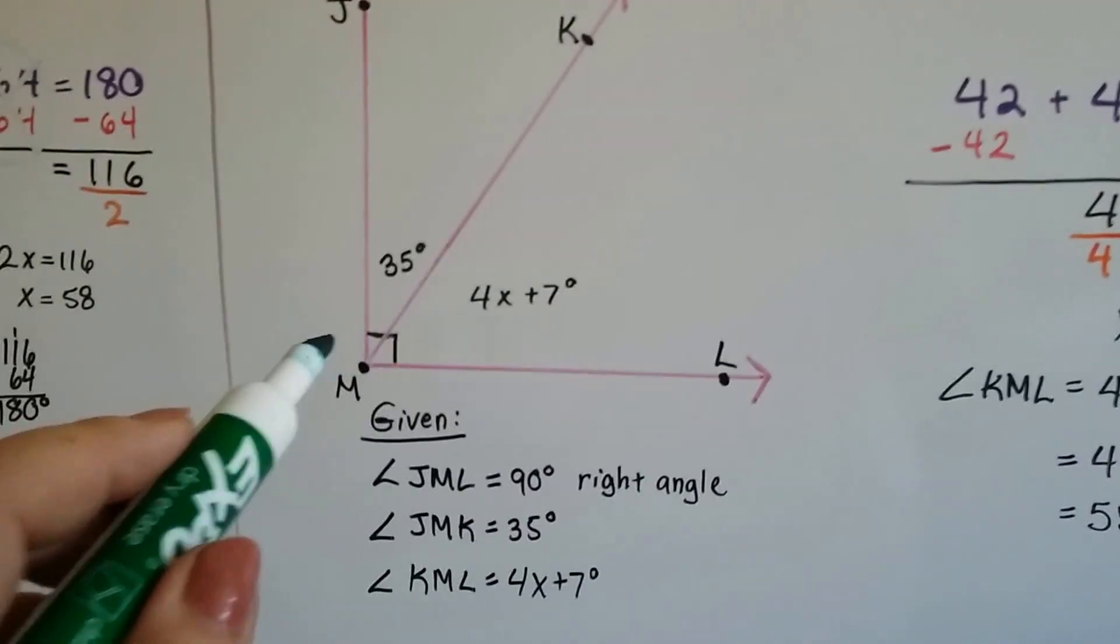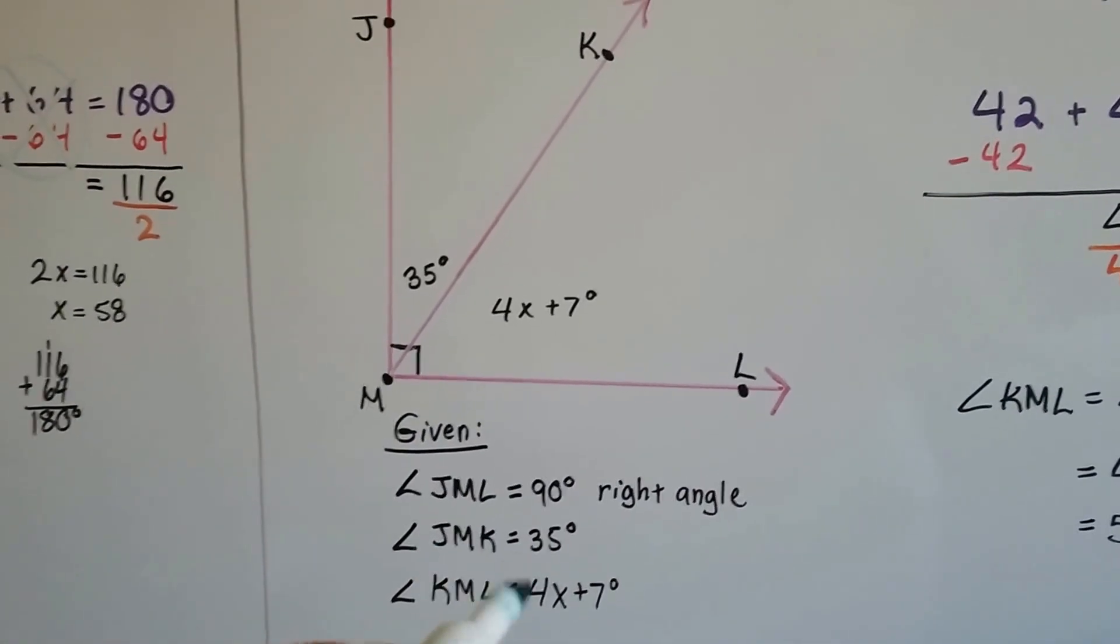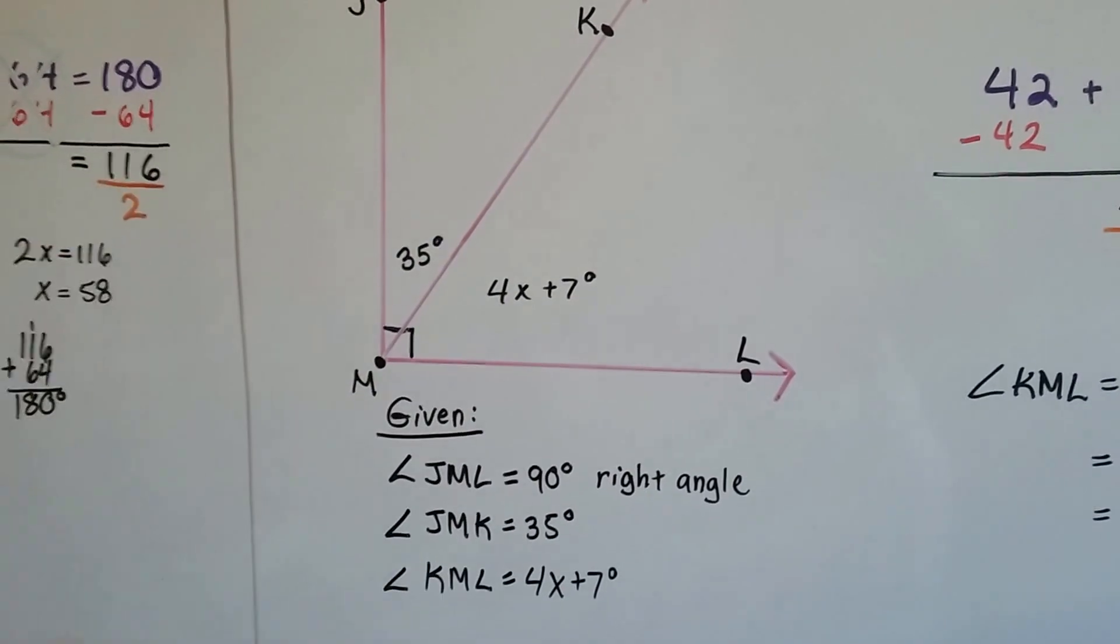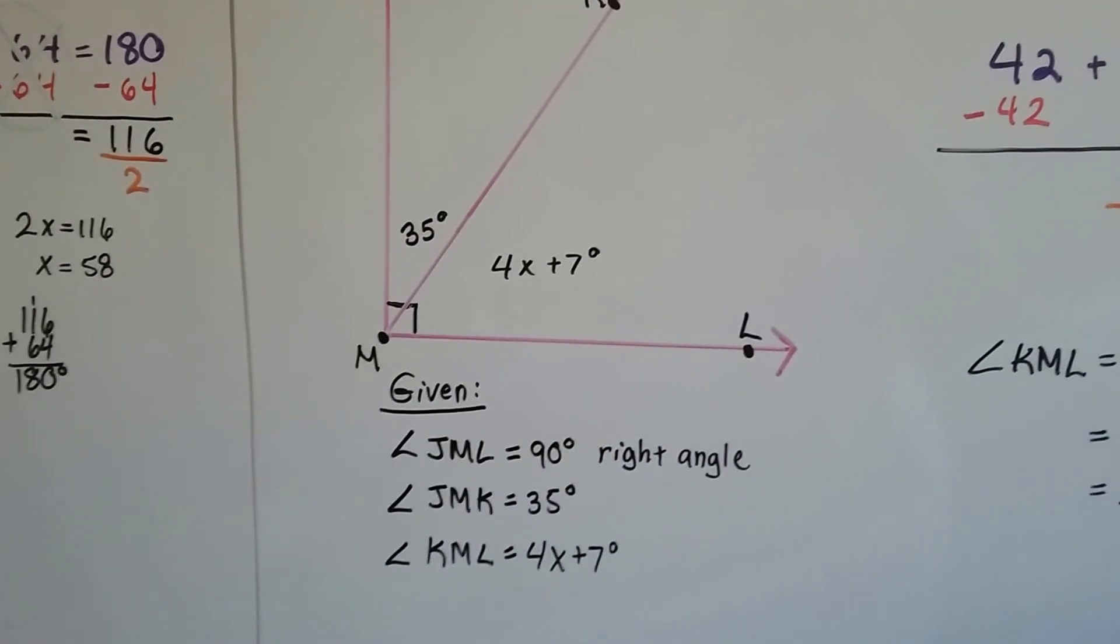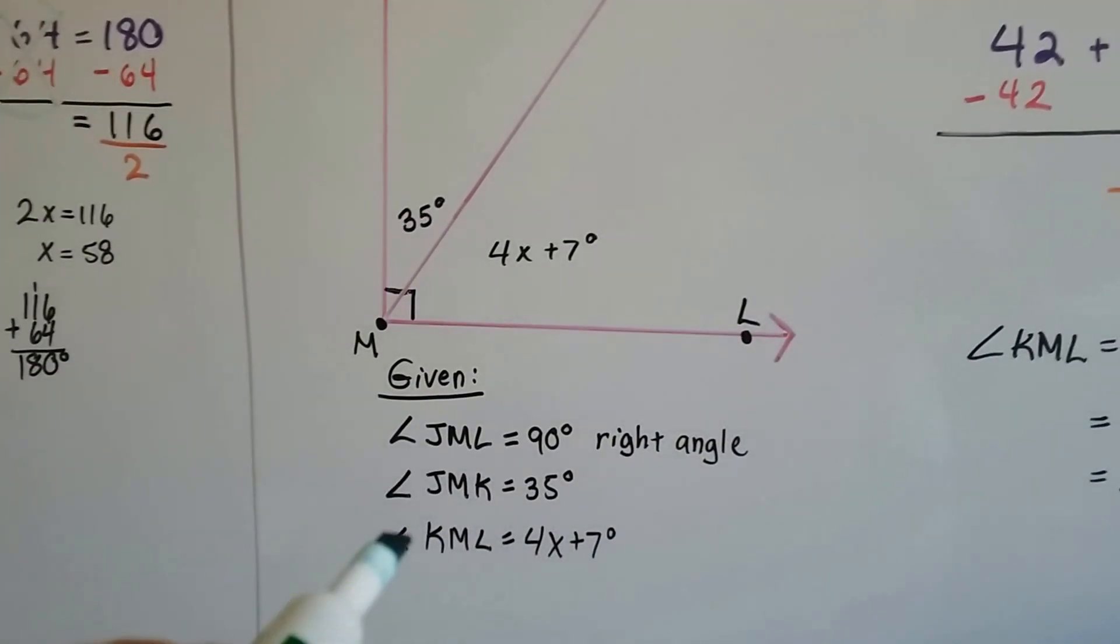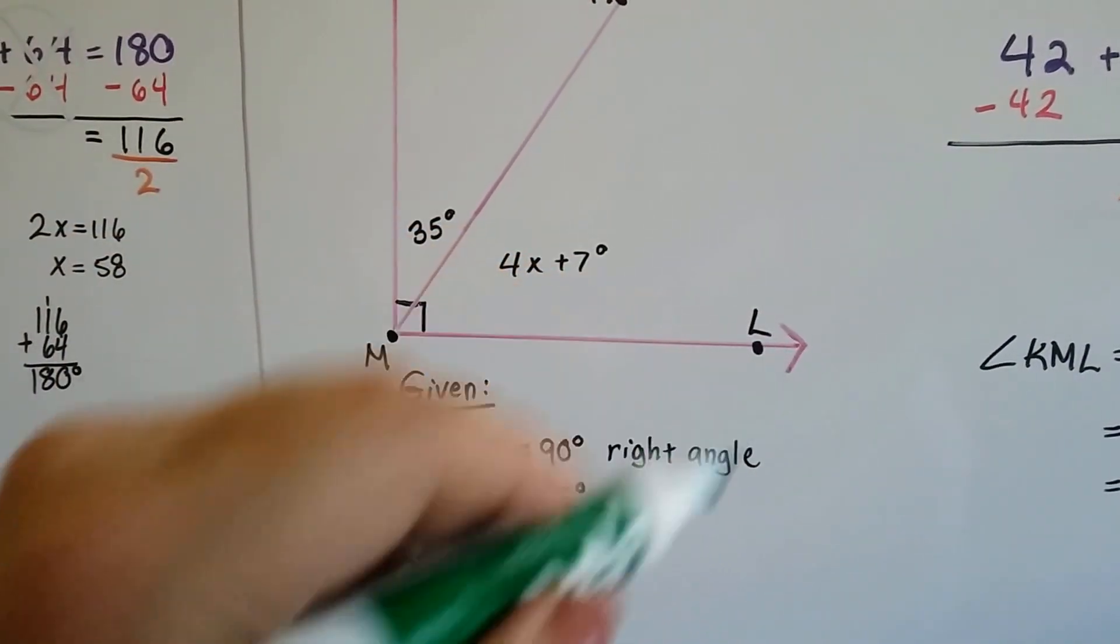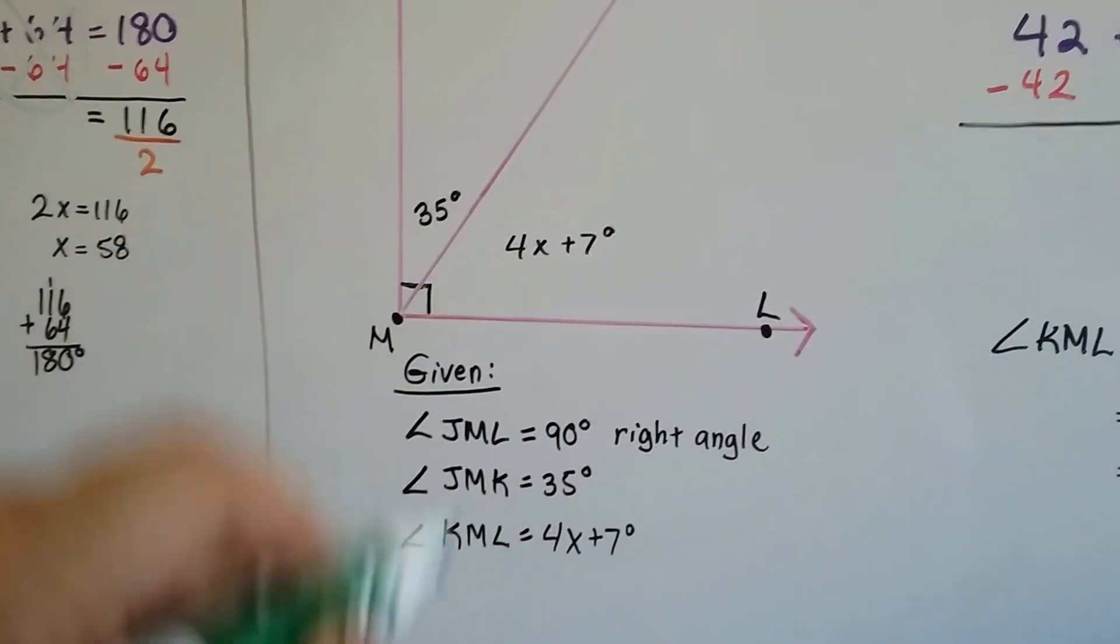Angle JMK equals 35 degrees. J, M, K equals 35 degrees. They gave that to us too. And they also gave us that KML, angle KML here to here to here, is 4X plus 7 degrees.